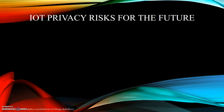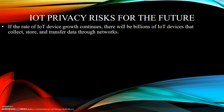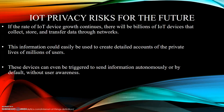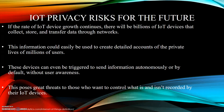IoT Privacy Risks for the Future. If the rate of IoT device growth continues, there would be billions of IoT devices that collect, store, and transfer data through networks in a very short time. This information could easily be used to create detailed accounts of the private lives of millions of users, thus destroying the idea of privacy in IoT devices. These devices can be triggered to send information autonomously or by default without user awareness, posing a problem for users who want to control what is and isn't recorded by their IoT devices.